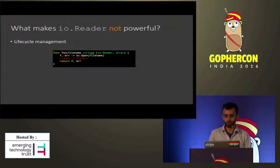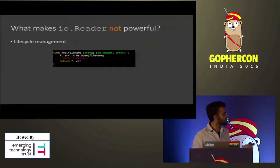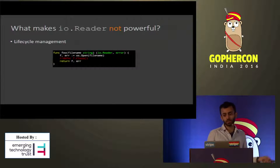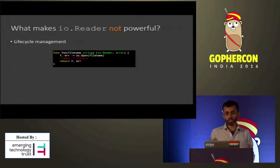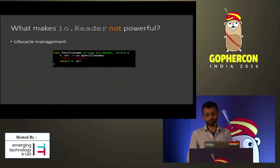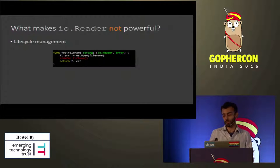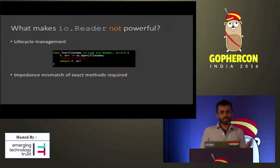You can fix this by changing the method signature to a ReadCloser. But if you can't change the method signature, the only other option is to document the expectation and hope the caller knows to call close on it. The second issue is the impedance mismatch with the exact methods required — which is the reason NopCloser exists. It's a nice convenience, but it would be better if we didn't really need it in the first place.